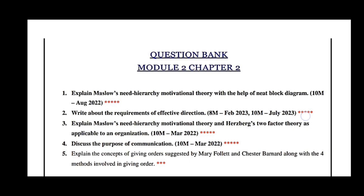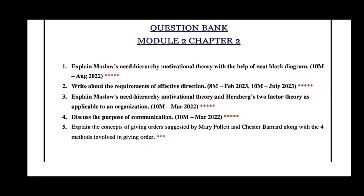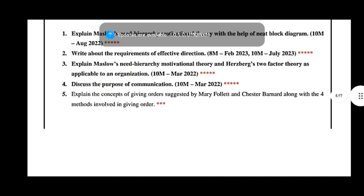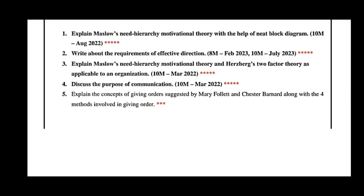Module 2, Chapter 2: Explain Maslow's need hierarchy motivational theory with the help of a need block diagram — 10 marks, August 2022. Write about the requirements of effective direction — 8 marks, February 2023 and 10 marks, July 2023. Explain Maslow's need hierarchy and Herzberg's two-factor theory as applicable to an organization — 10 marks, March 2022. Discuss the purpose of communication — 10 marks, March 2022. Explain the concept of giving orders as suggested by Mary Follett and Chester Barnard, along with the four methods involved in giving orders.